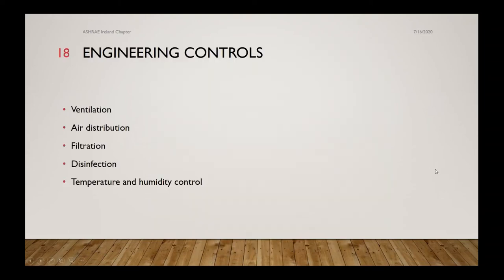Now let's move on to the engineering controls. The five things that we have at our disposal are ventilation — using air to remove contaminants — air distribution and air movement in spaces, filtration for removing particles physically from the air, disinfection, and temperature and humidity control. These all come up in the various guidance produced by ASHRAE and other HVAC societies and organizations.